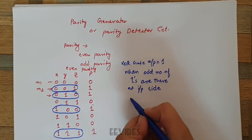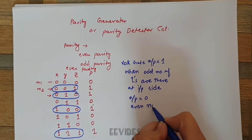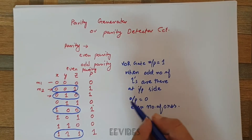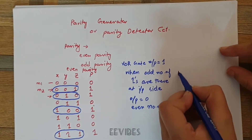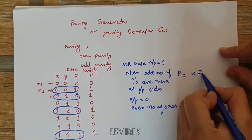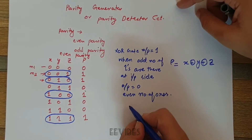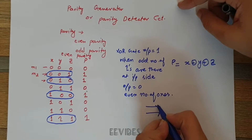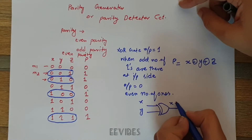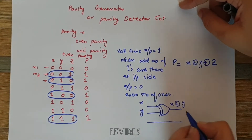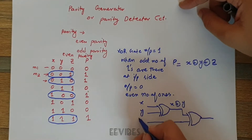The XOR gate produces output equal to zero when you have an even number of ones. So you can express the parity function as the XOR of X, Y, and Z. To draw this parity function, first XOR the two variables X and Y — giving X XOR Y — and then take the XOR of that result with the third variable Z.